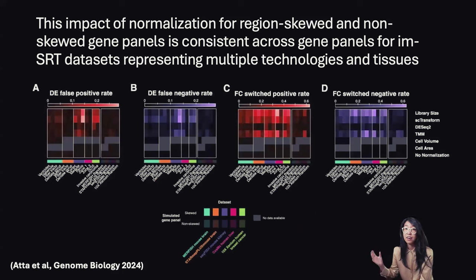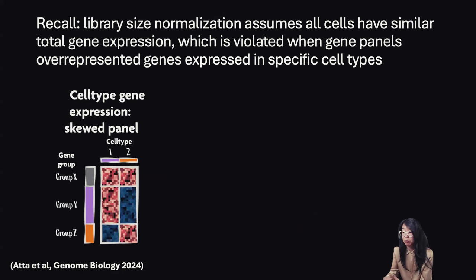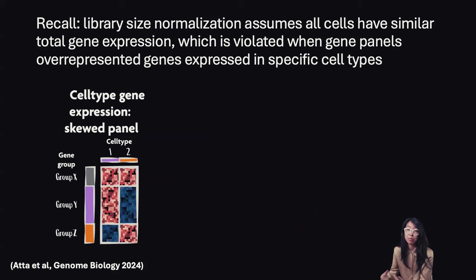It's worth noting that non-skewed gene panels do not exhibit this type of false error rate in terms of false differential expression and fold change switches. Likewise, normalization methods that don't consider the total number of genes detected — such as cell volume normalization — are not impacted by these skewed gene panels. This is all very expected because library-size normalization assumes that all cells have similar total gene expression, which is violated when gene panels over-represent genes expressed in a specific cell type or specific tissue region.